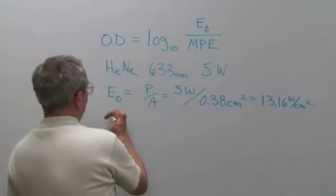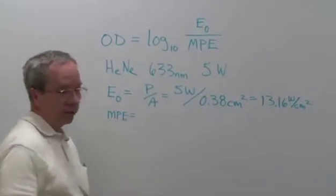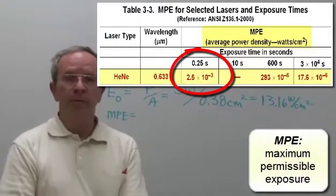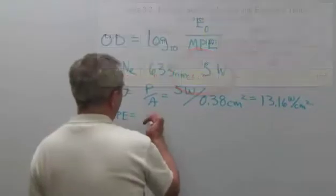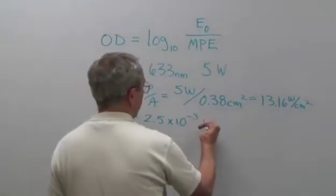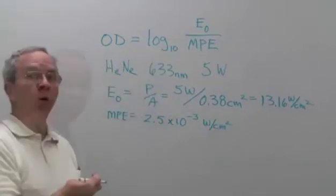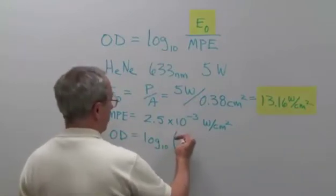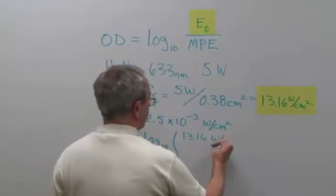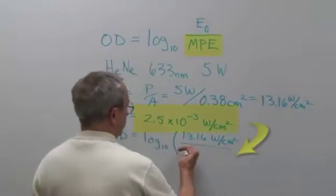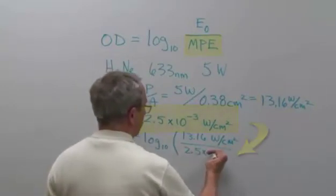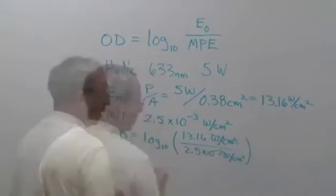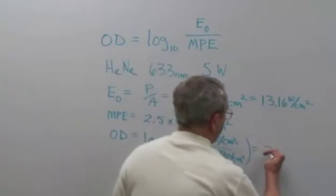If you look up in Table 3 of your book for the MPEs for the helium neon laser for a quarter of a second, you'll see that the MPE would be 2.5 times 10 to the minus 3 watts per centimeter squared. The formula for the optical density: log base 10 of that ratio of 13.16 watts per centimeter squared divided by 2.5 times 10 to the minus 3 watts per centimeter squared. The watts per centimeter squared cancels out, and that calculates out to 3.7.